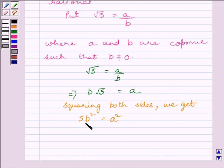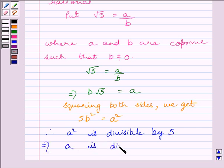Clearly, we can see 5 and B square both are factors of A square. So, we can write A square is divisible by 5. This further implies A is divisible by 5.